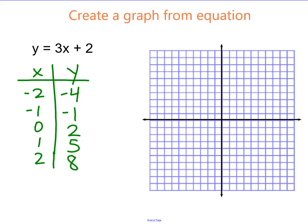So now I'm going to plot those points. That would be the P, the points. I'm going to go negative 2, negative 4. Negative 1, negative 1. 0, 2. 1, 5. And 2, 8. So there's my points.